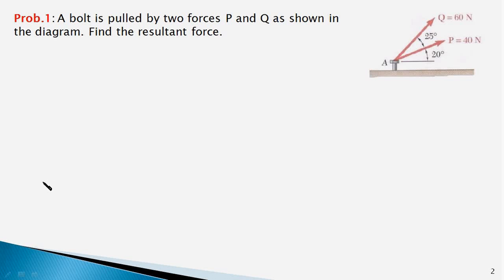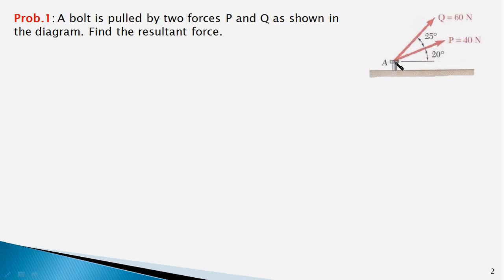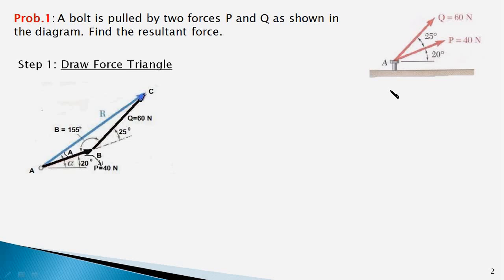In the last video we looked at the force triangle method for adding two concurrent forces. Now let us apply the method in solving a few problems. In this problem, there are two forces P and Q of magnitude 40 and 60 Newtons, and we have to find the resultant of these two forces acting on the bolt. We would solve this problem using the force triangle method. The first step is to draw the force triangle.